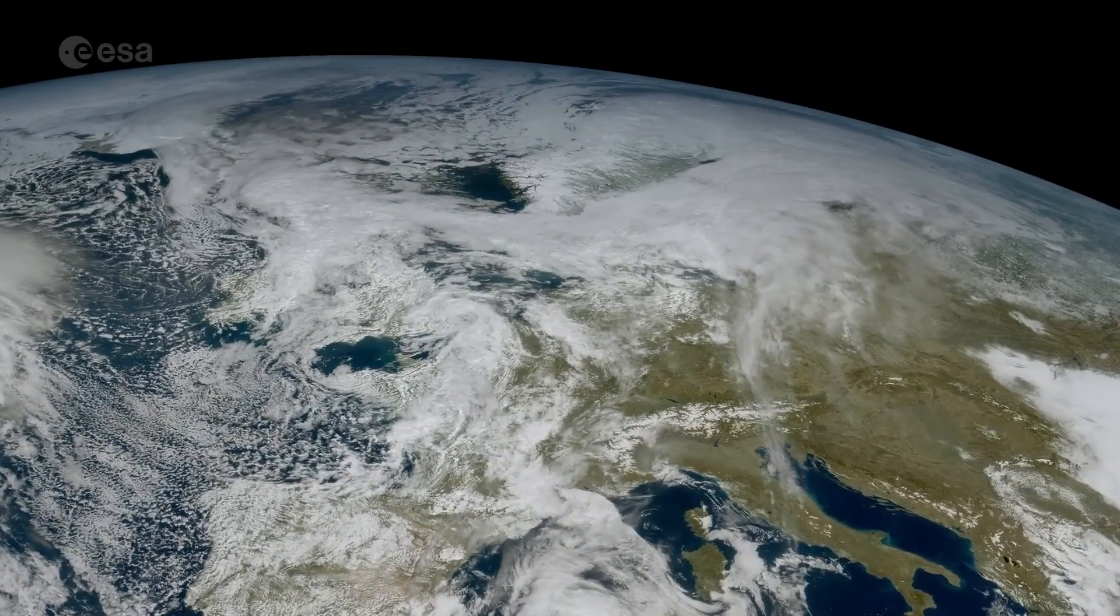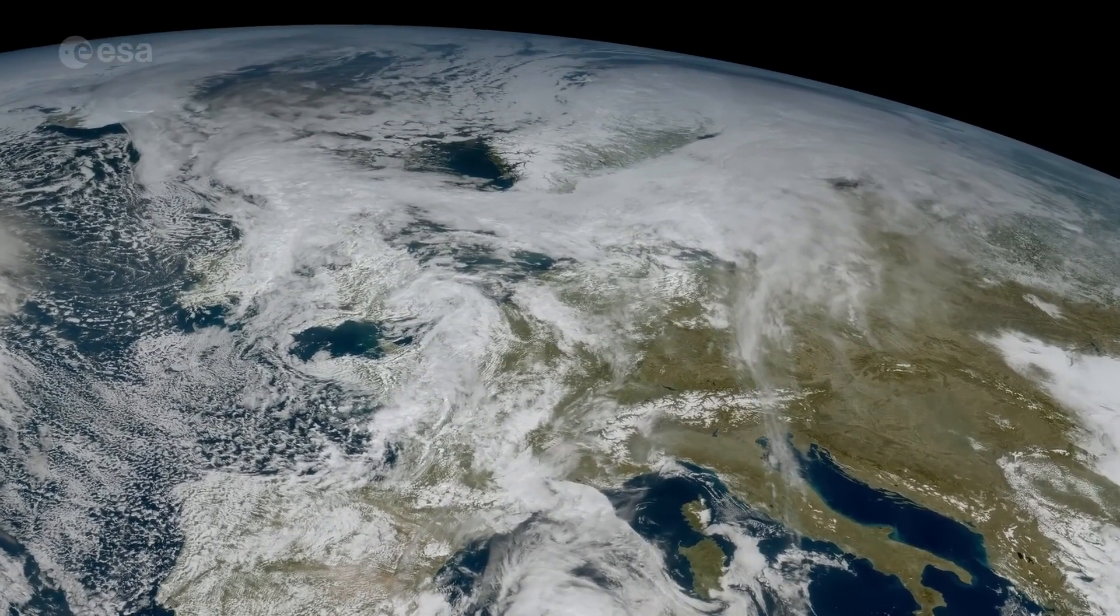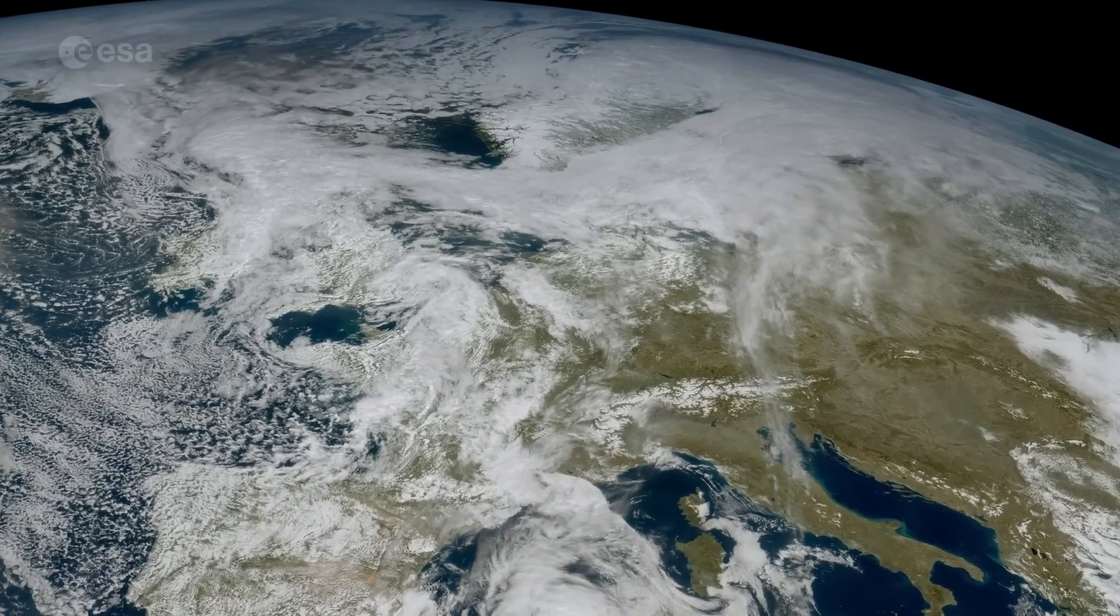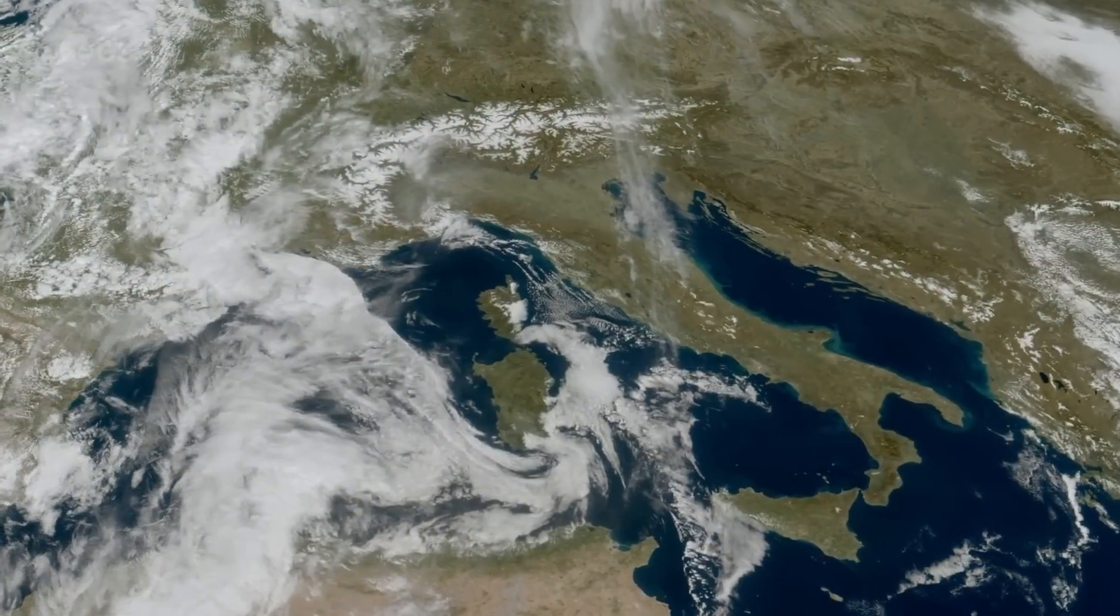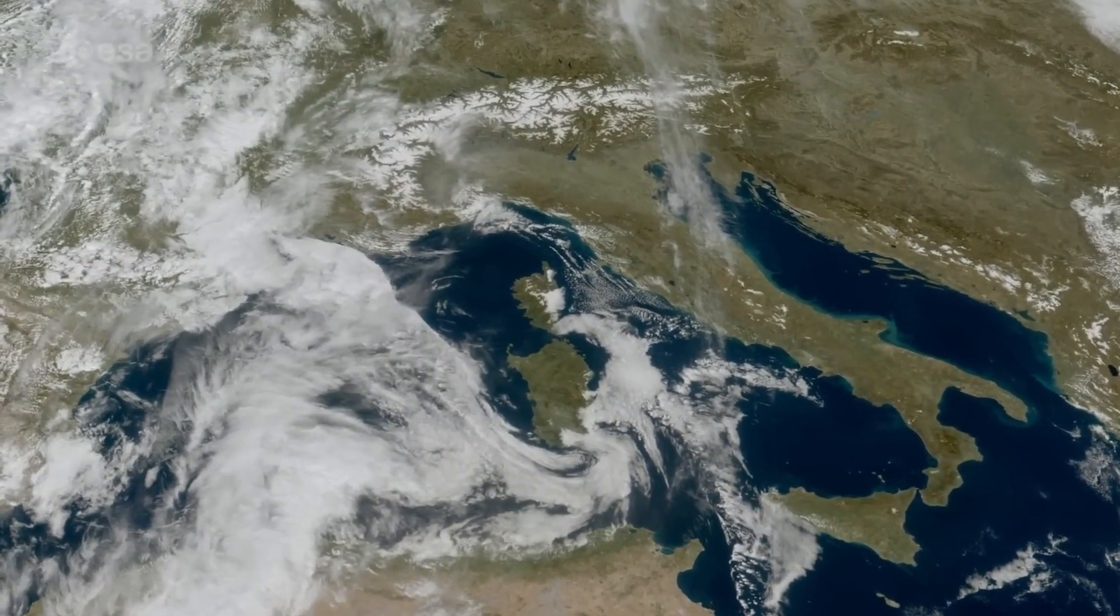Much of Northern and Western Europe, as well as Scandinavia, can be seen blanketed in clouds, with relatively clear skies over Italy and the Western Balkans.